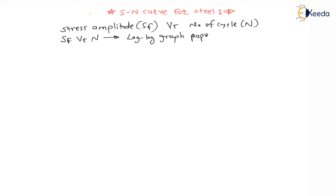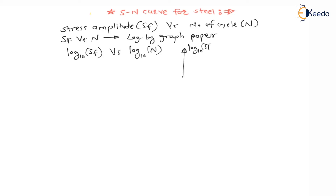We have to plot the curve between log₁₀(SF) versus log₁₀(N). While plotting the curve, log₁₀(SF) is considered on the y-axis and log₁₀(N), the number of revolutions, is considered on the x-axis.